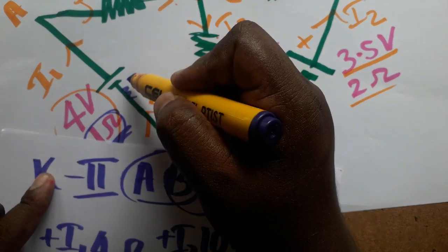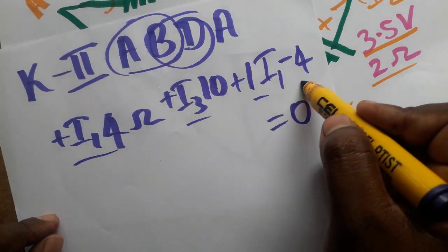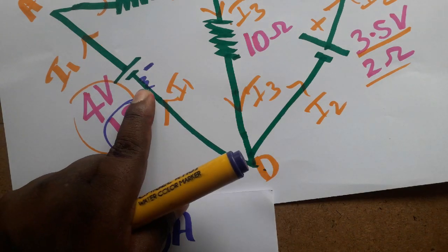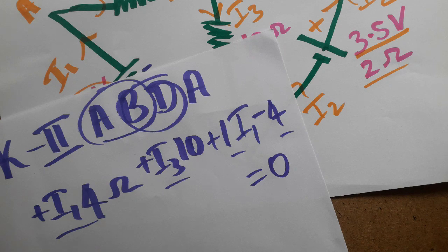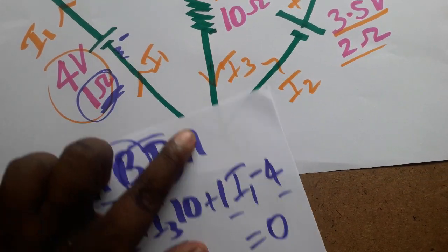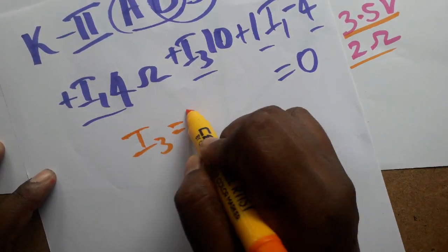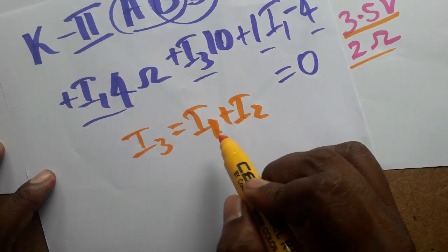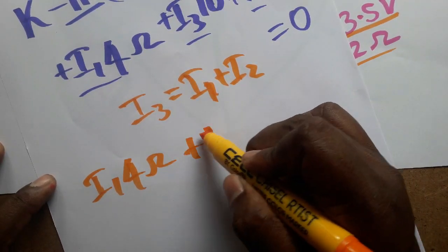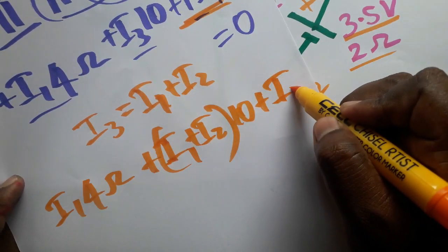Going from D back to A, the first terminal encountered is negative, so I write minus 4 volts equals zero. The algebraic sum of all voltages around the loop equals zero. Using I3 = I1 + I2, I substitute: 4·I1 + (I1 + I2)·10 + I1·1 = 4. Expanding the 10 inside gives 4·I1 + 10·I1 + 10·I2 + 1·I1 = 4.